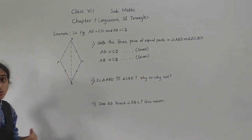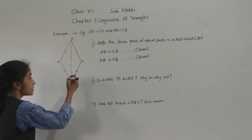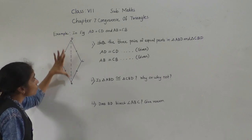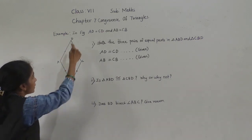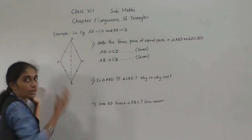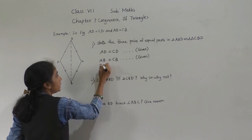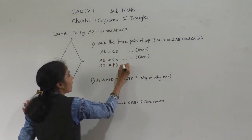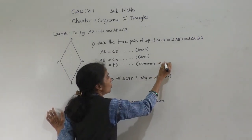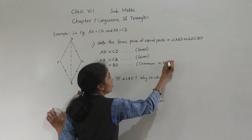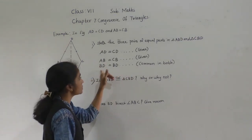Now which is the third part we have to show equal? The third part is BD is equal to BD. Why BD is equal to BD? Because BD is the common arm in both these triangles — in triangle ABD and triangle CBD, BD is the common side, common in both triangles.